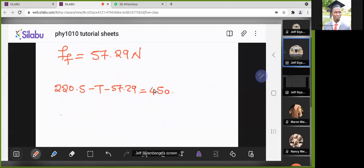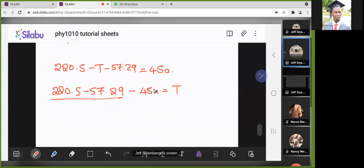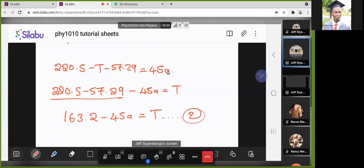Where there's force of friction here, I'll now just put that value, which is 57.29. Then simplify the like terms. I can make T the subject here. I'll have 220.5 minus 57.29 minus 45a equals T. And we get 163.2 minus 45a equals T. So we can take this as equation two.